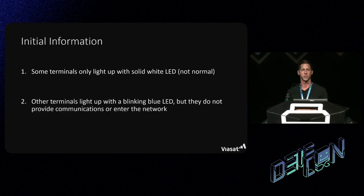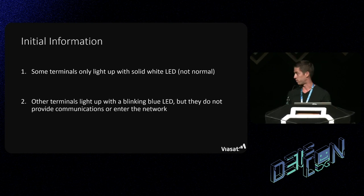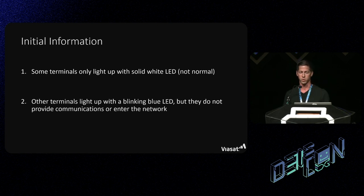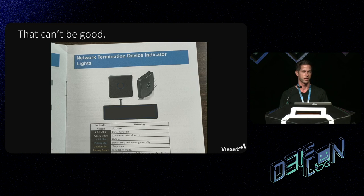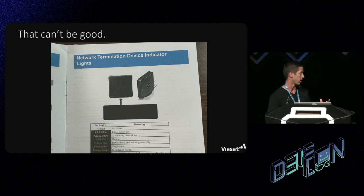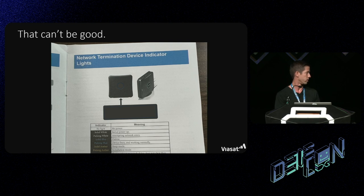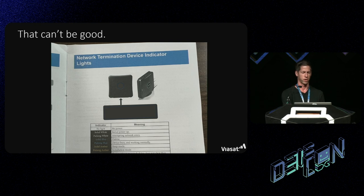So what did we know? What did we not know? Mark shared that graph earlier — that was one of our initial pieces of knowledge. We also learned there were complaints from distributors that some terminals would only light up with a solid white LED, which is not normal. Other terminals would light up with a blinking blue LED — another abnormal case — and they would not provide communications or enter the network. Solid white means initial power up — early stage, not good. The pulsing blue means the device is busy but working normally, so it's booting up.